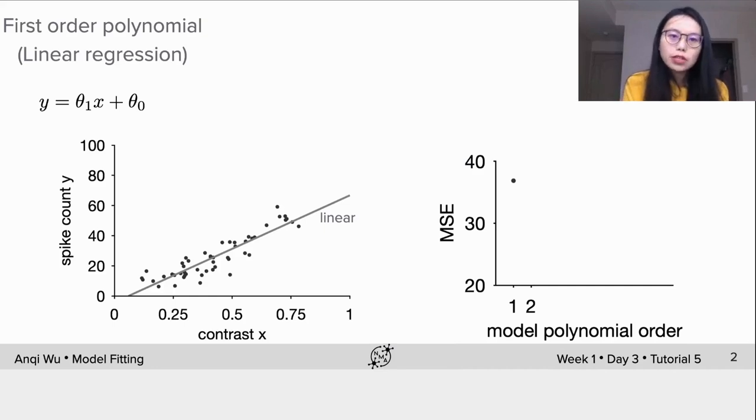In the previous video, we introduced polynomial regression. Next we show how different orders of polynomials affect the model fitting. First I'm showing the first order polynomial which is essentially the linear regression model. The green line is the model fit. We also plot the MSE on the right.